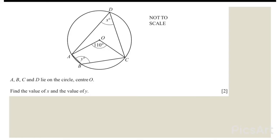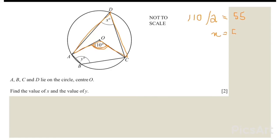This is another question. A, B, C and D lie on a circle with center O. Find the value of x and the value of y. We have to find this x value and this y value. In this shape, the center angle is 110 degrees, which means the angle at the circumference would be half of it. So 110 divided by 2 gives 55. Therefore x equals 55 degrees.